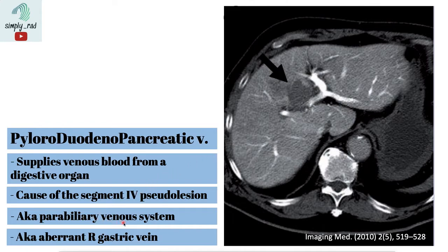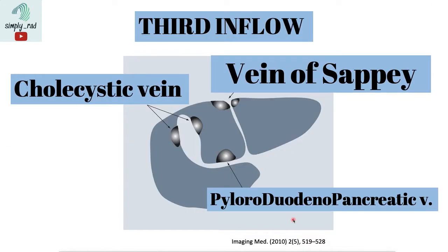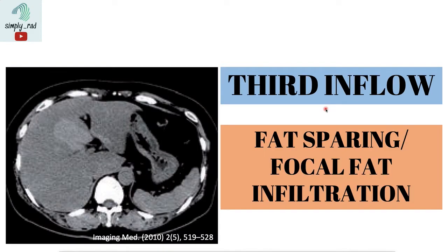Another name for this parabiliary venous system is the aberrant right gastric vein. We have now seen why certain areas of the liver are typical locations for pseudolesions — because these are the typical locations of third inflow vessels. Although not a proven reason, third inflow vessels would create differences in flow in the same regions where we see focal fat sparing and focal fat infiltration, explained by differences in delivery of nutrients and hormones.